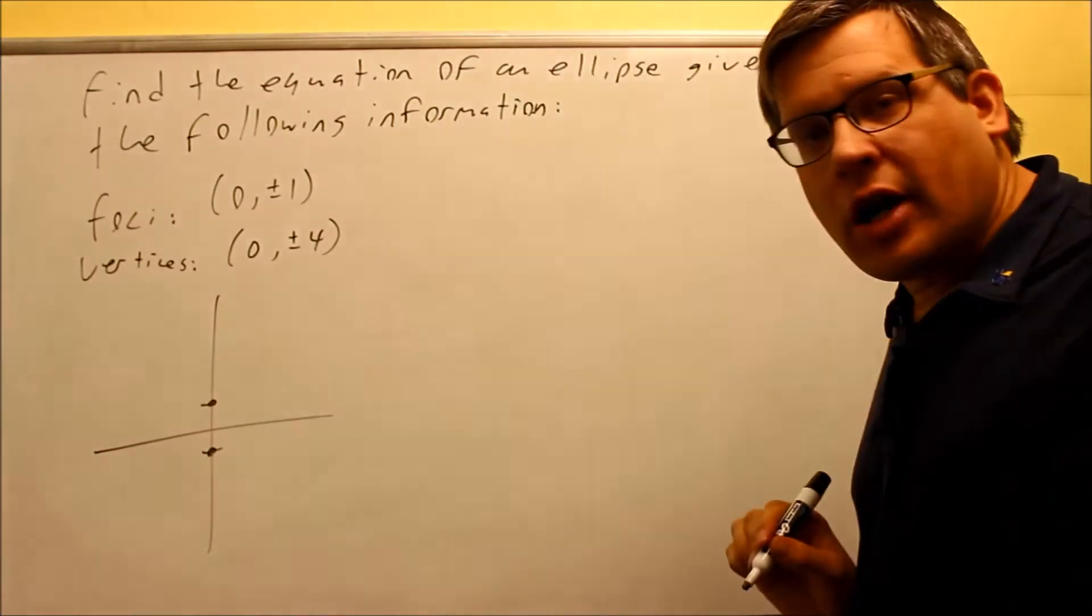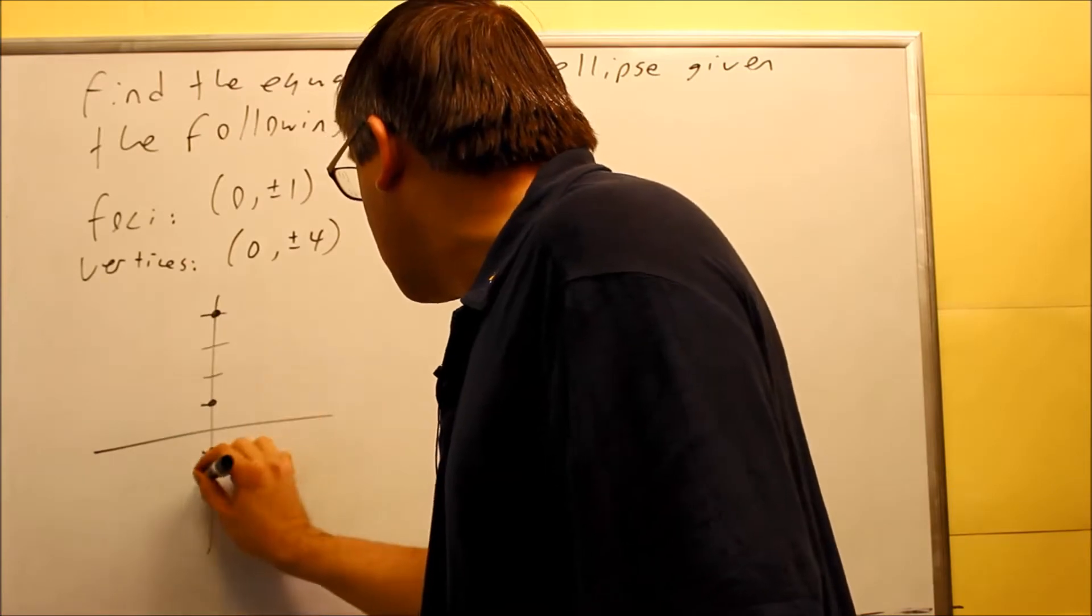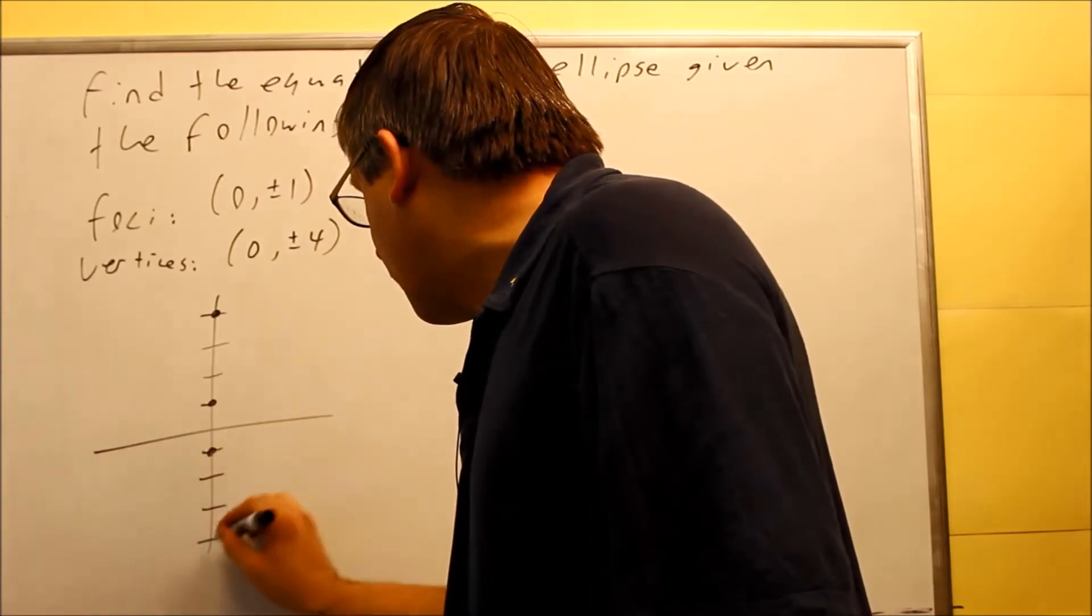Those are my two foci, and they give you the vertices also. So I go up 4 and down 4.